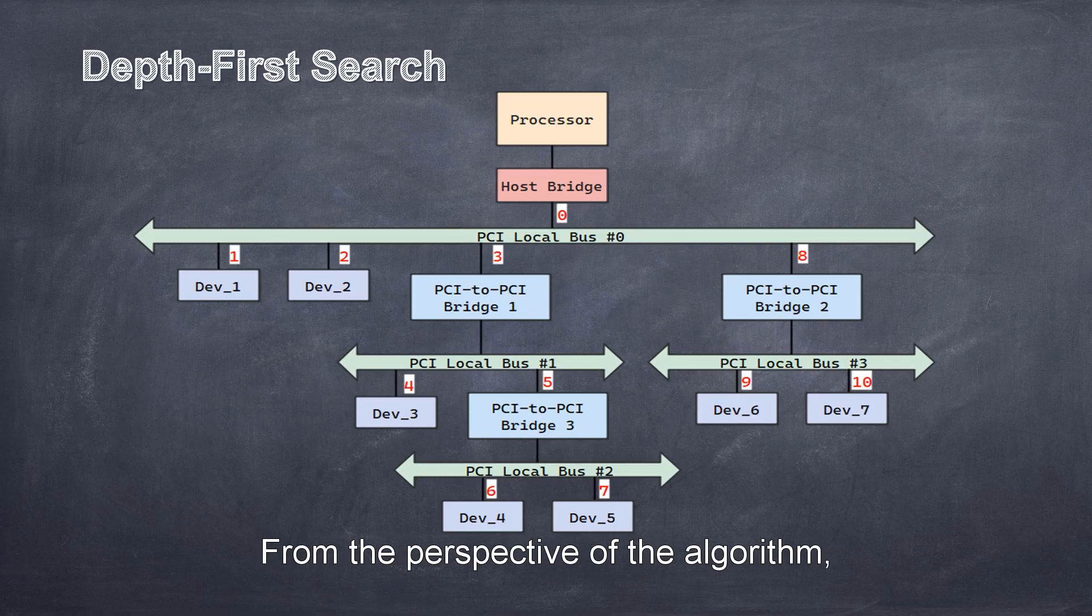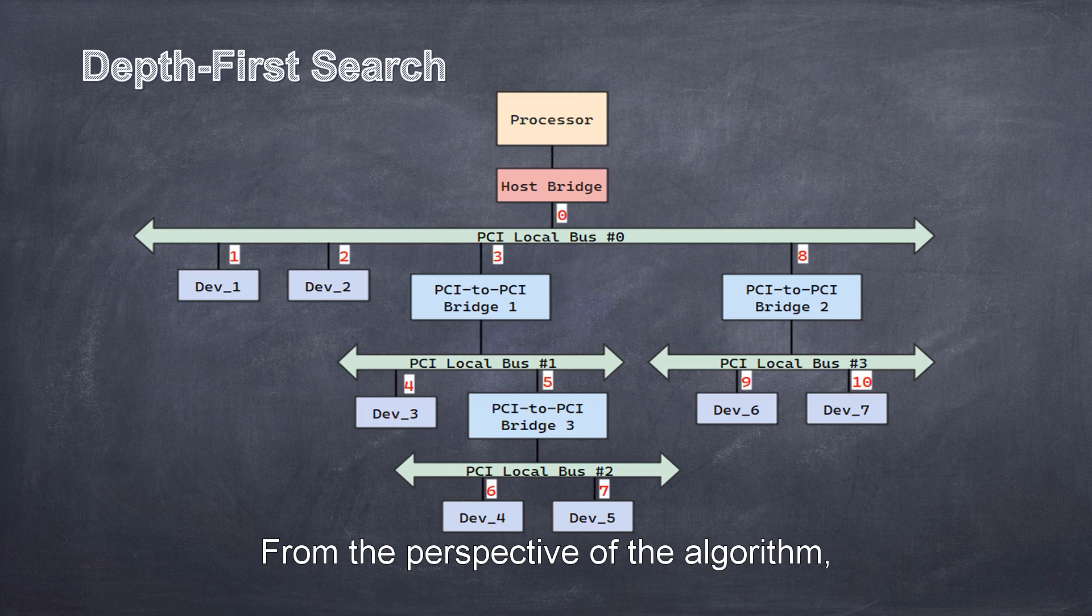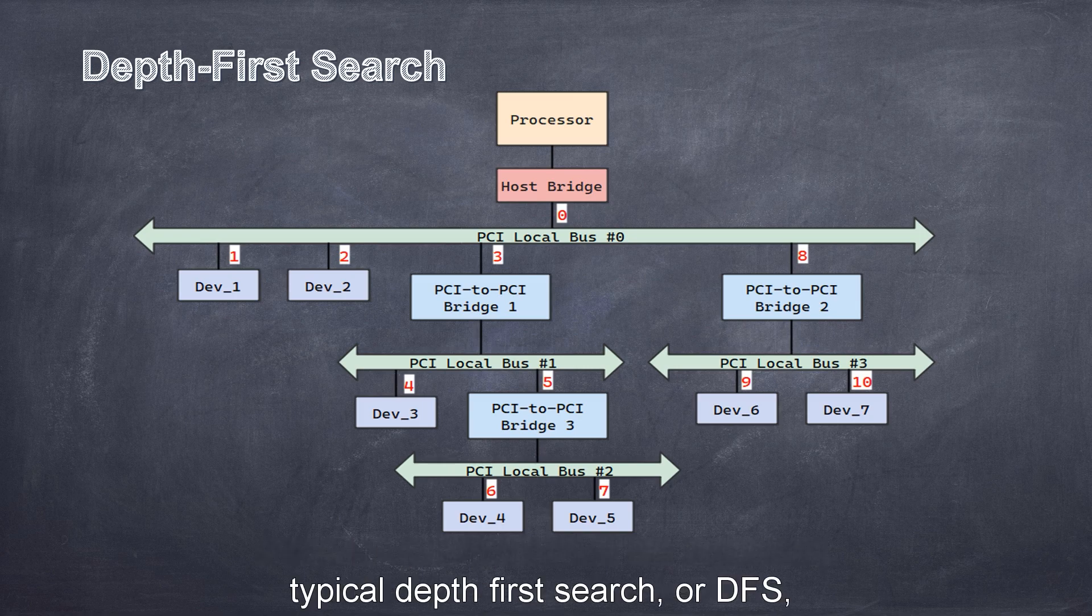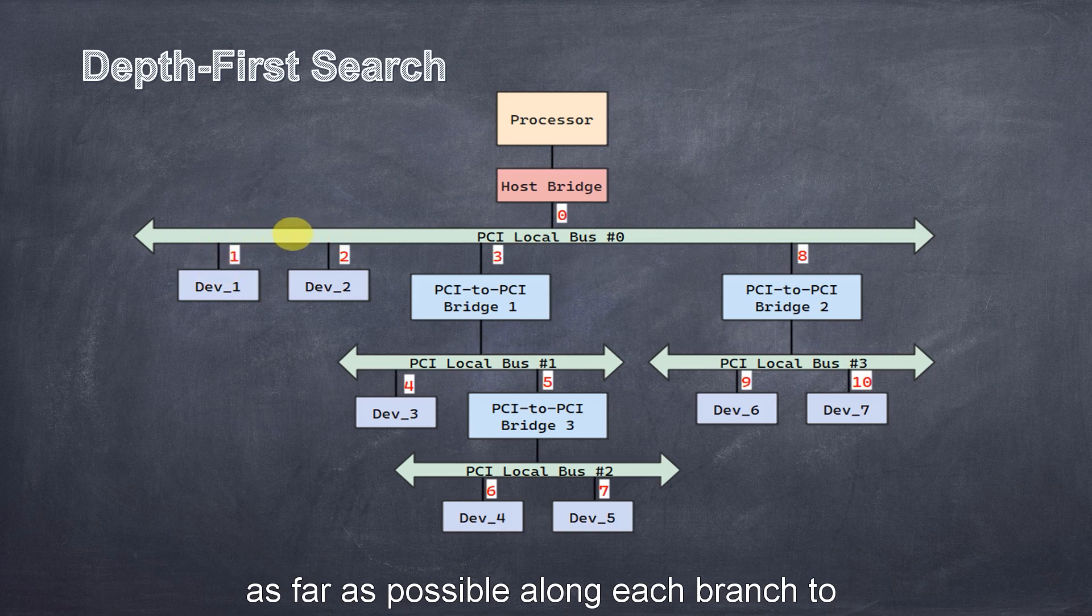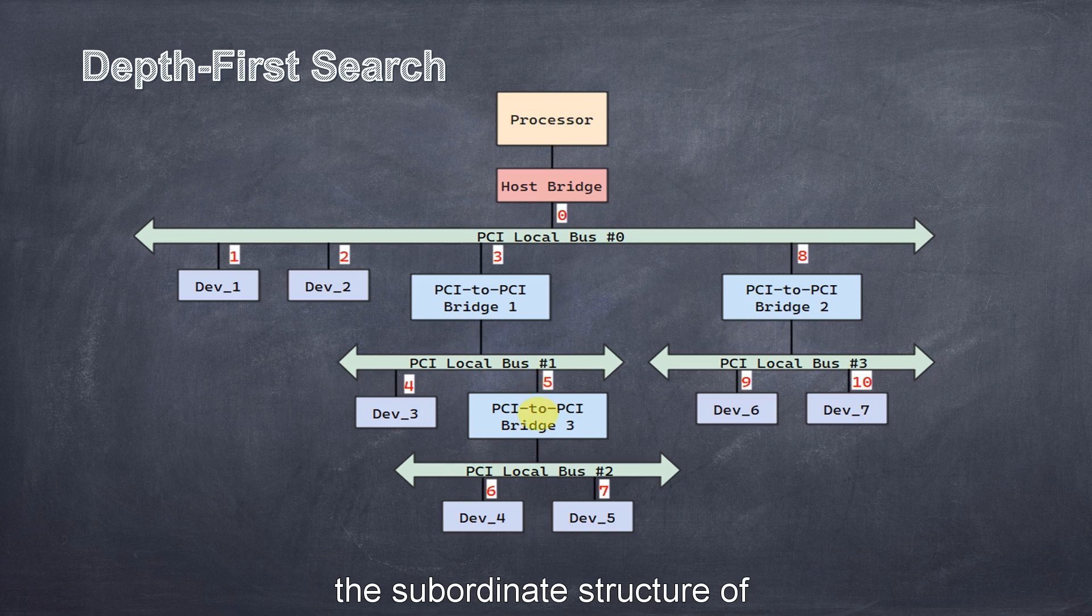The scanned agent devices are registered with the system. If a subordinate bus is found, the function creates a child data structure and calls itself recursively to scan the subordinate bus. From the perspective of the algorithm, the scanning process is a typical depth-first search, or DFS, as shown in the diagram. Starting at zero, the system explores as far as possible along each branch to scan each agent device and the subordinate structure of each bridge device, and then backtracks to the previous bus.